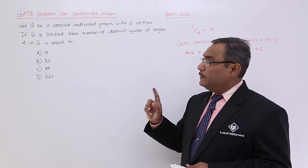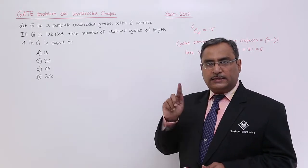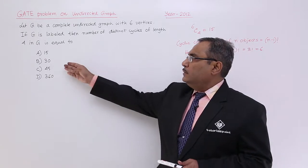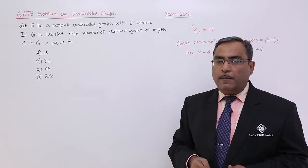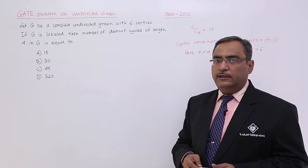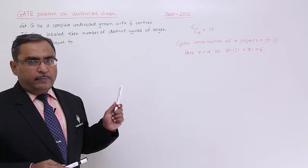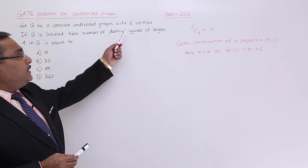Number of distinct cycles of length 4 means using 4 edges to make the cycles, and we need to find the count. We are having 6 vertices here.